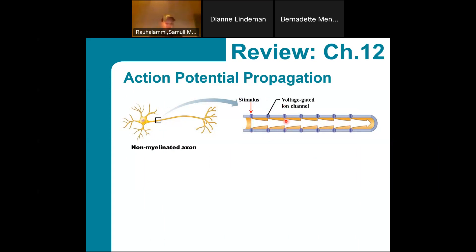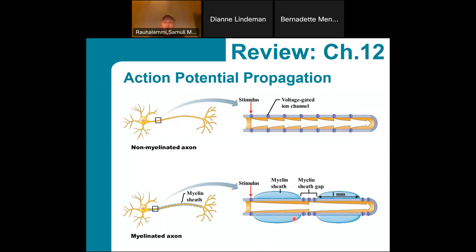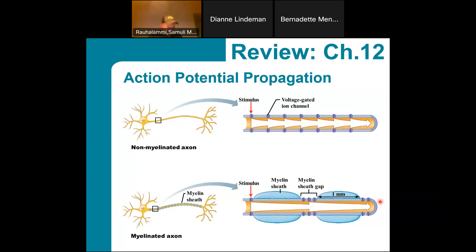Myelin wrapped around axons serves a two-fold purpose: it acts as insulation and importantly speeds up electrical impulses traveling along the axon. Rather than the impulse moving at a steady rate along the entire axon, it almost jumps from one myelin segment to another — from one gap to the next — allowing it to move much more quickly. Myelinated axons are really fast at carrying messages.